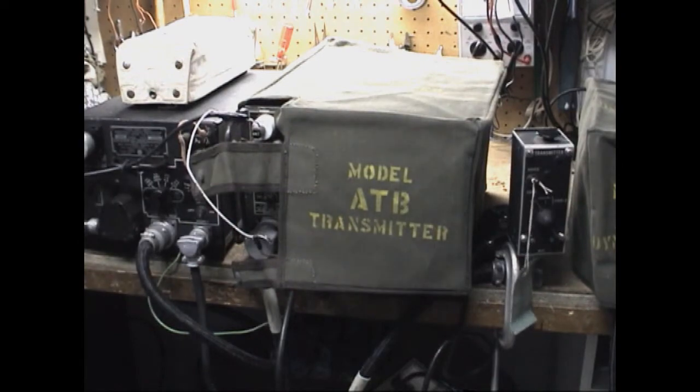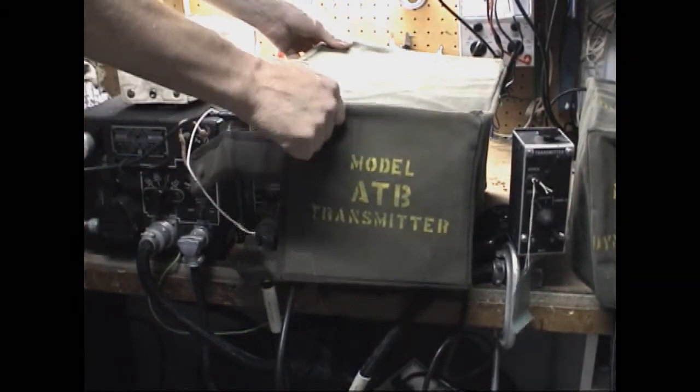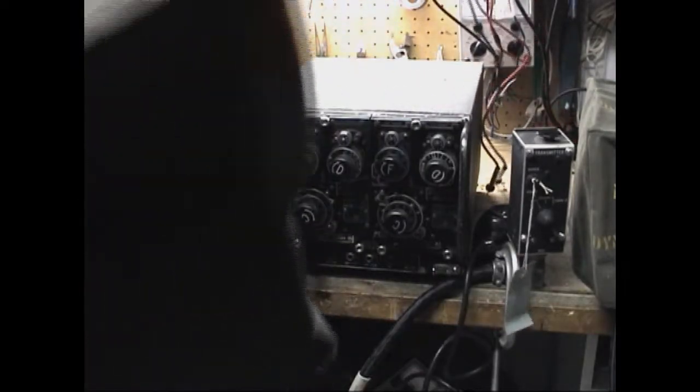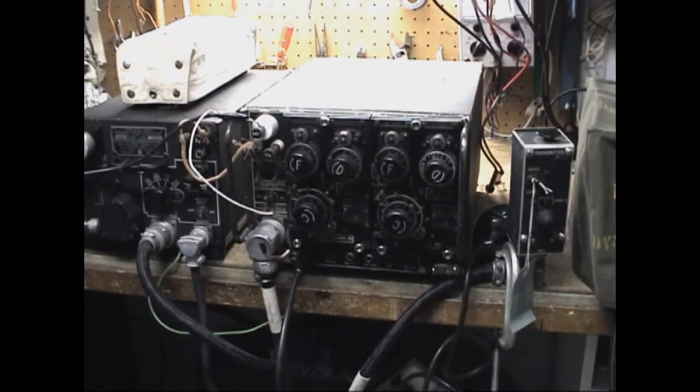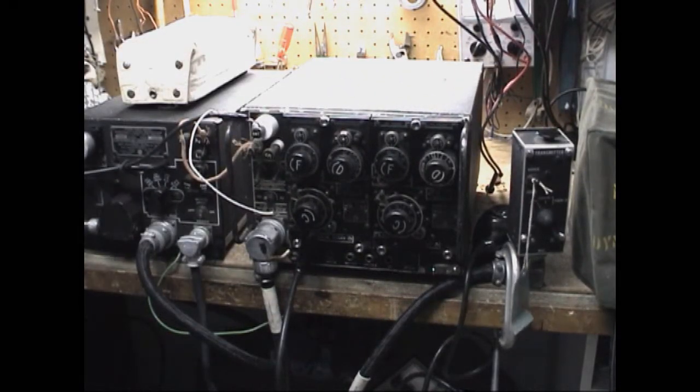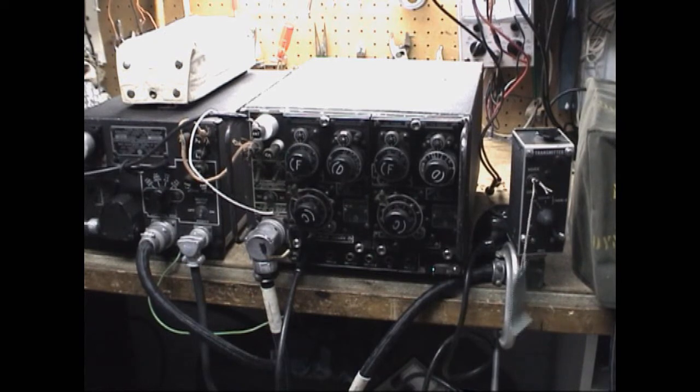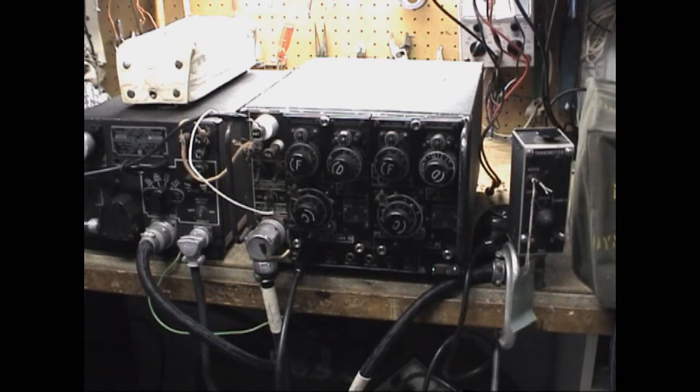Okay, this is the ATB transmitter. Take the cover off. The ATB transmitter was made in a much smaller amount than the ARB receiver. They made about 30,000 of the ARB receiver and they only made about 4,000 of these transmitters. So they're a bit hard to find nowadays.